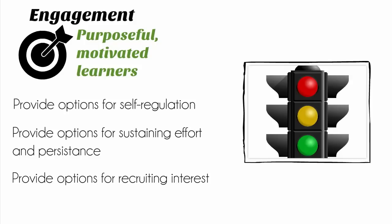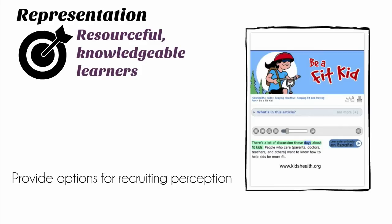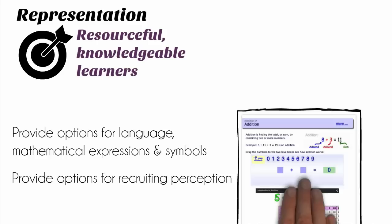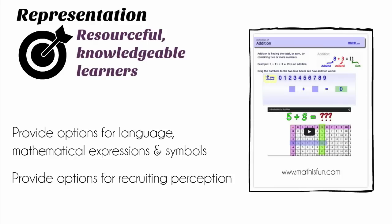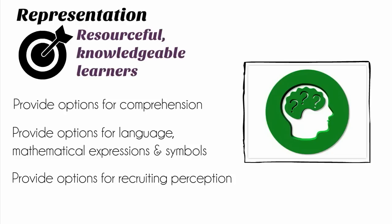Next is representation, with the goal of resourceful, knowledgeable learners. Provide options for perception, such as offering ways to customize the display of information and including alternatives for visual and audio information — relatively easy with a plethora of devices and apps now available. Provide options for language, mathematical expressions, and symbols — this promotes multiple media, moving away from text-only instruction, and ensures students have options to understand both text and mathematical notation. Provide options for comprehension — this focuses on activating background knowledge, highlighting big ideas, and guiding the process of information to help students move beyond basic recall to conceptual understanding and higher-order thinking.